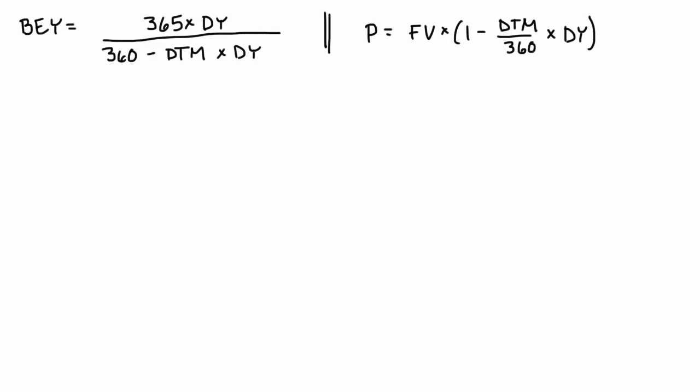So the first step is to figure out what the discount yield is based on the bond equivalent yield. In order to do that, we know that the bond equivalent yield is 3%. So using this formula over here, you know that the bond equivalent yield is 3%. And what we're trying to solve for here is the discount yield.